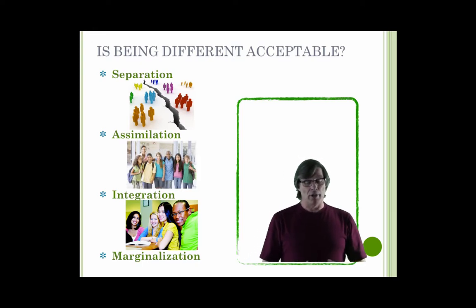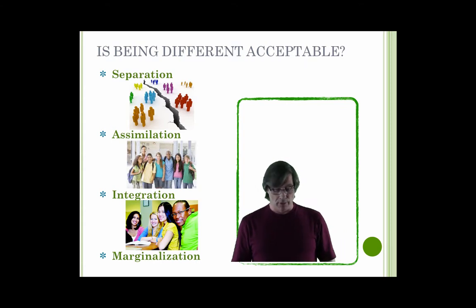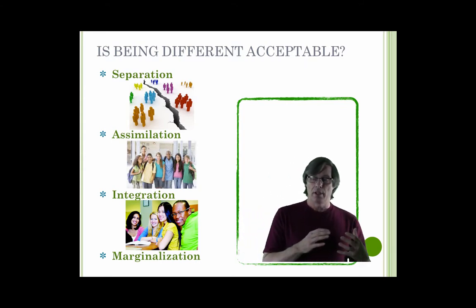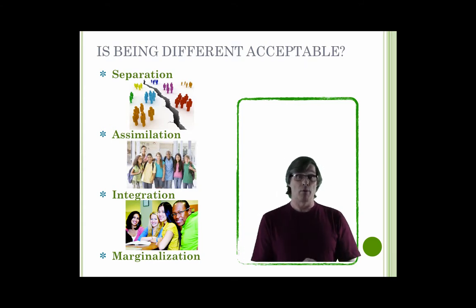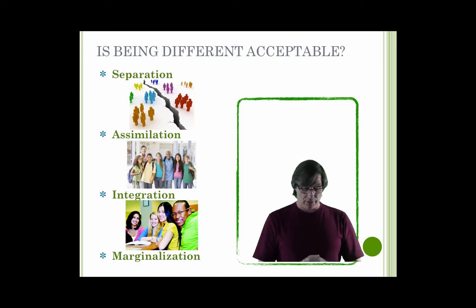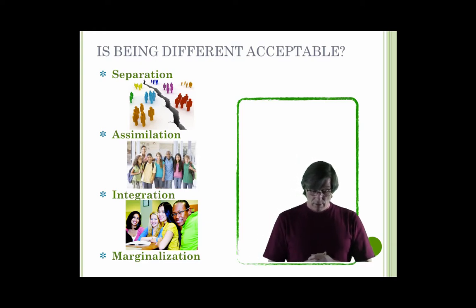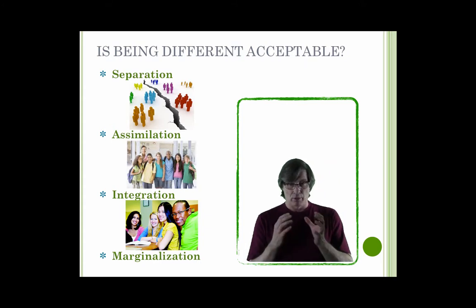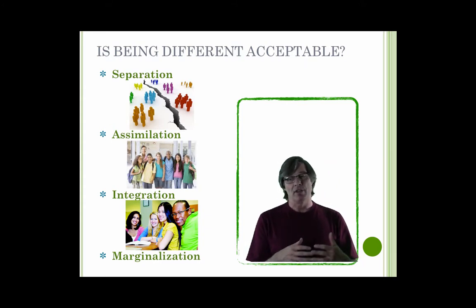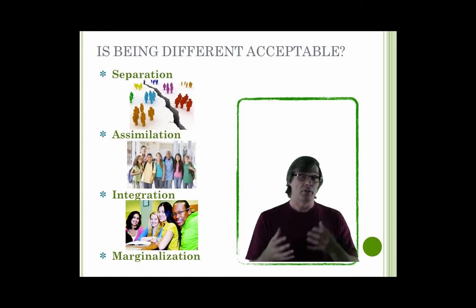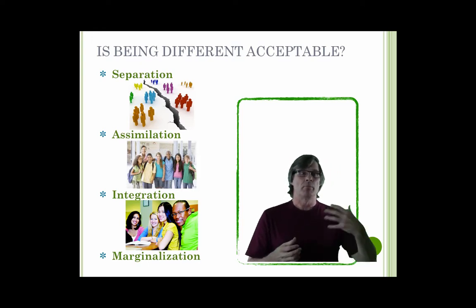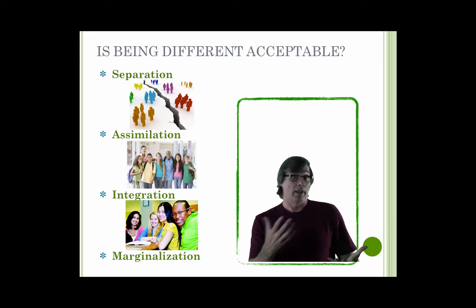Integration is when there are high levels of engagement with both heritage and mainstream culture — a nice blending of both. It's considered the most adaptive pathway because it implies bicultural competency. If someone describes themselves as Polish Canadian or Italian Canadian, that falls into integration — a blend of Canadian culture and, say, Italian culture.